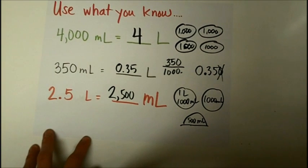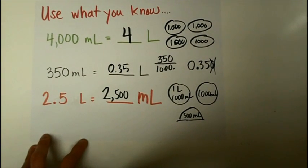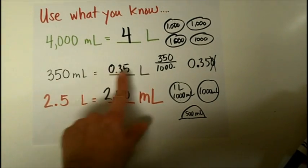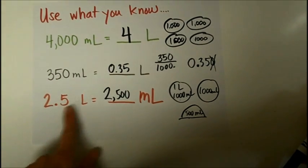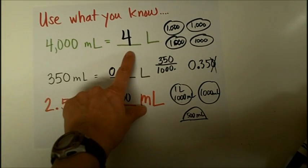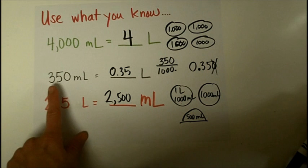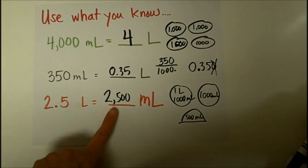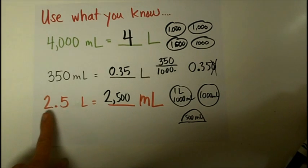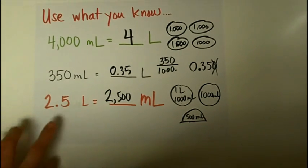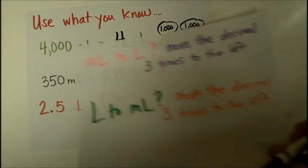I hope that you'll notice that you can use a shortcut. See how we have a 4 and a 4 and a 35 and a 35 and a 25 and a 25. I hope you will notice that when I go from milliliters to liters, the number gets smaller. Here, this went from 350 to a smaller number. And when I went from liters to milliliters, the number got bigger. 2.5 all the way up to 2,500.